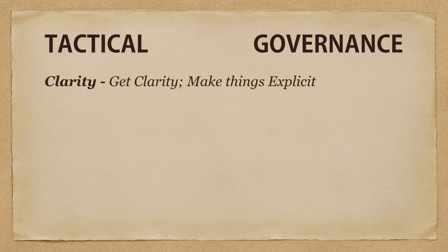Tactical and governance are different, but in some ways the same. In both cases, we're trying to get clarity and make things explicit. One of the big things you do in Holacracy is take what's implicit — not written down — and write it down so it's explicit. We make the implicit explicit. You're going to see lots of clarity in both tactical and governance, and throughout all of Holacracy.